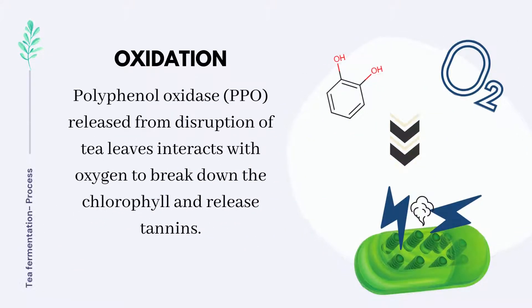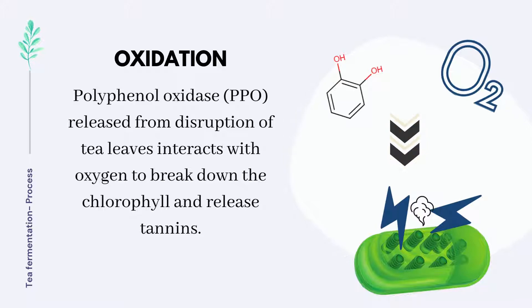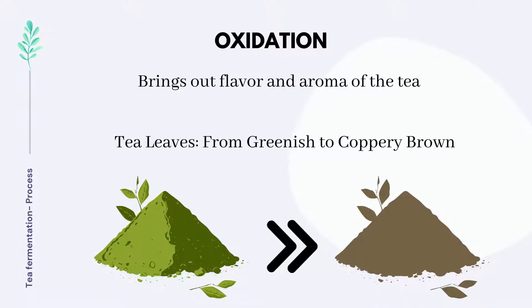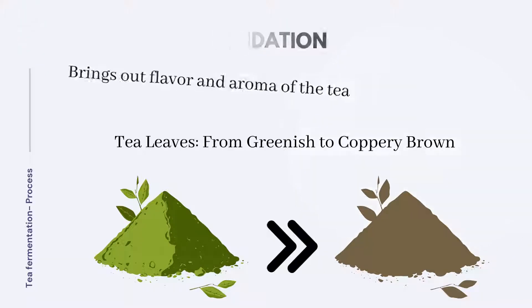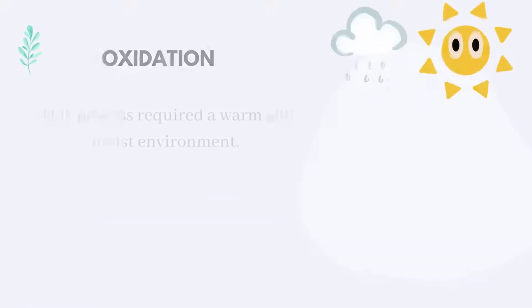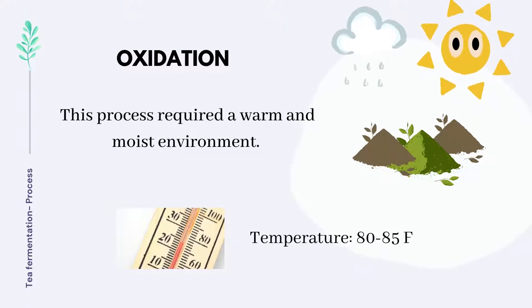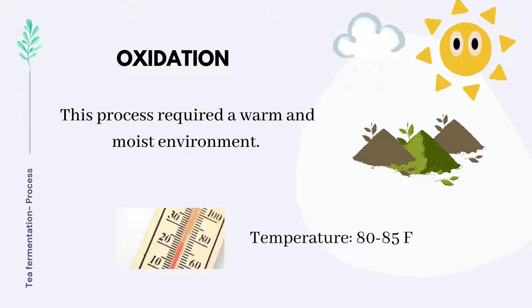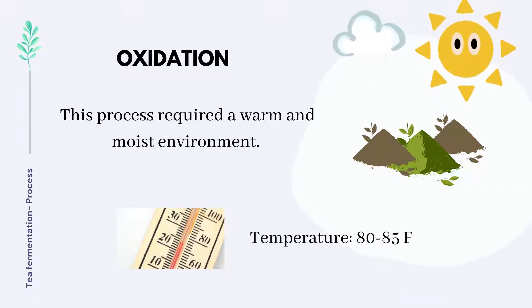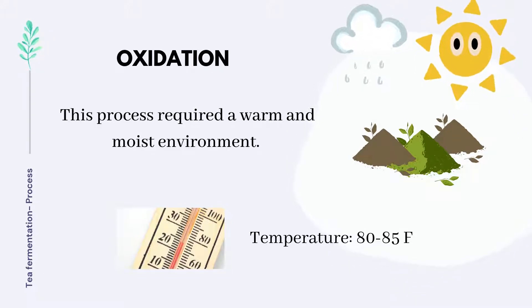During oxidizing, the enzyme polyphenol oxidase released from the destruction of tea leaves will interact with oxygen to break down the chlorophyll and release tannins. This brings up the flavor and aroma in the tea leaves. The leaves will change from greenish to coppery brown. This process requires a warm and moist environment, with temperatures kept between 80 to 85 degrees Fahrenheit. The length of the oxidation process leads to different types of true tea.